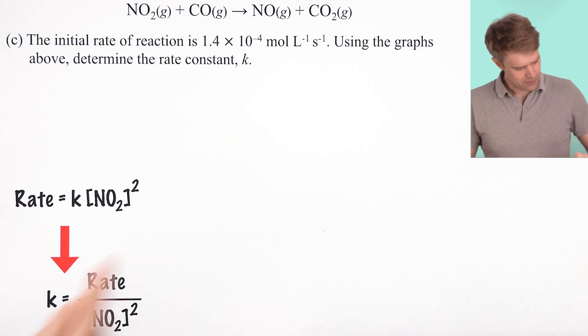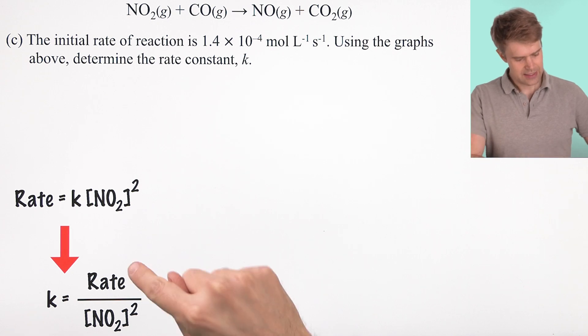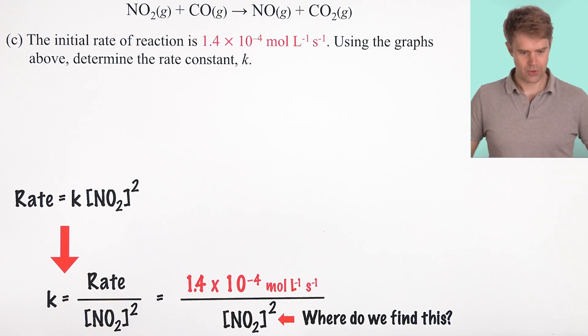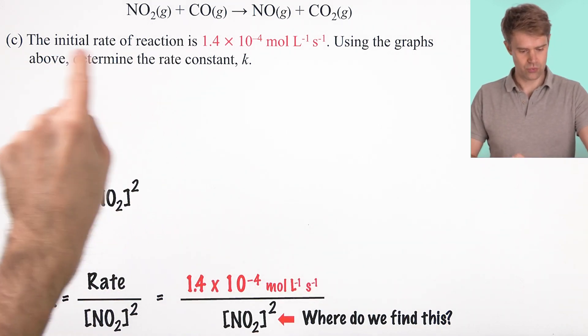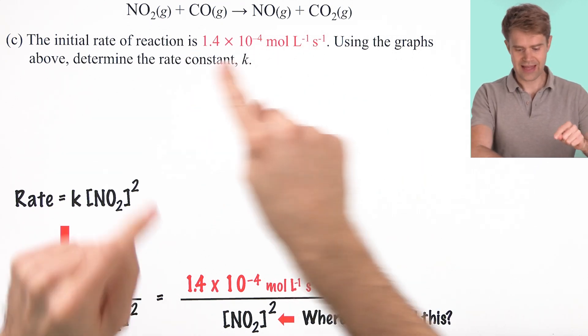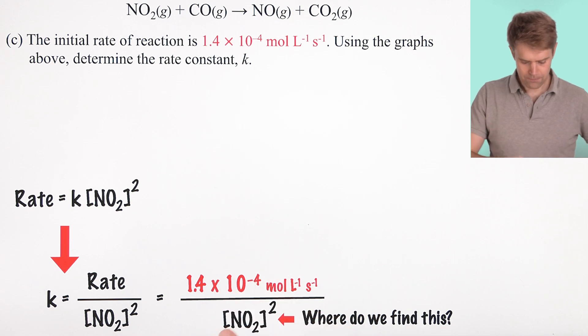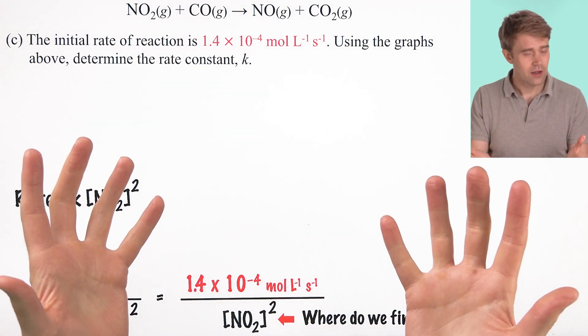We're solving for K here. So we can rearrange this equation, which gives us K equals rate divided by [NO2] squared. Now, let's start thinking about the values that we're going to plug in here. The problem gives us the initial rate of the reaction. That's this value here. We can plug it in right here. Now, we need the concentration of NO2. Where are we going to get that?